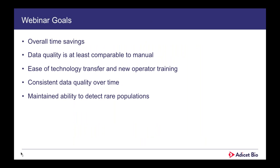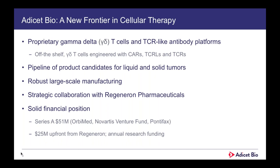The overall goals for this webinar are: to give you a sense of the overall time savings we've seen by implementing the DA cell; to show that the data quality is at least comparable to the manual centrifugation method; to highlight that the technology makes it easy to transfer an assay from one group to the next or to train new operators; to show that data has stayed relatively consistent over time; and that we've maintained the ability to detect rare populations, which is important as we develop the next round of cell therapy products.